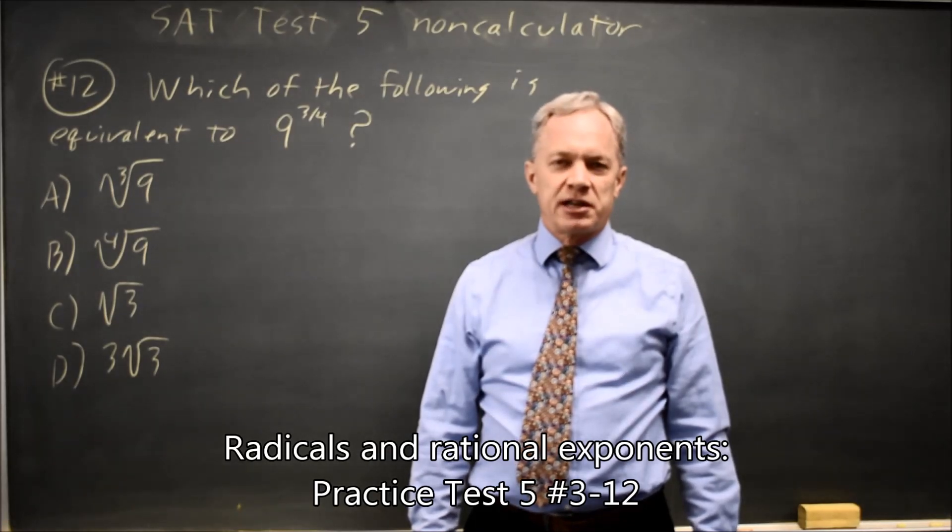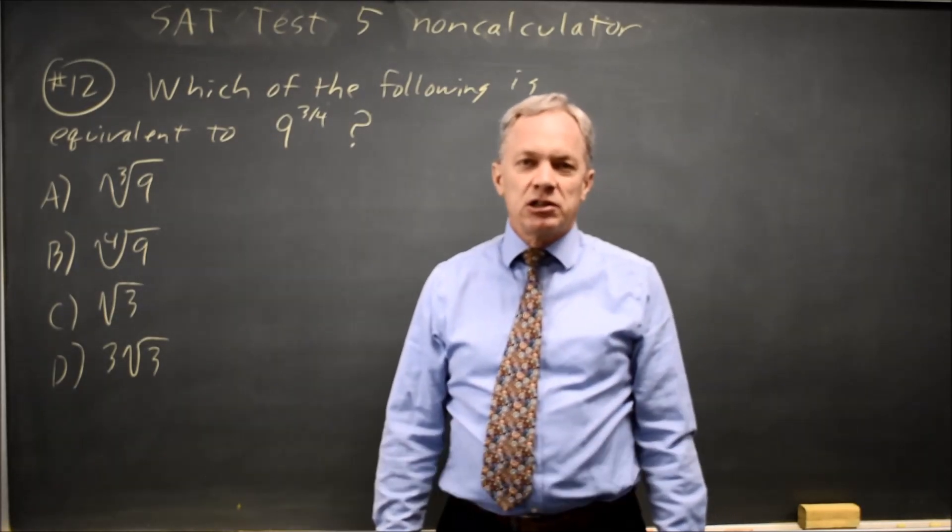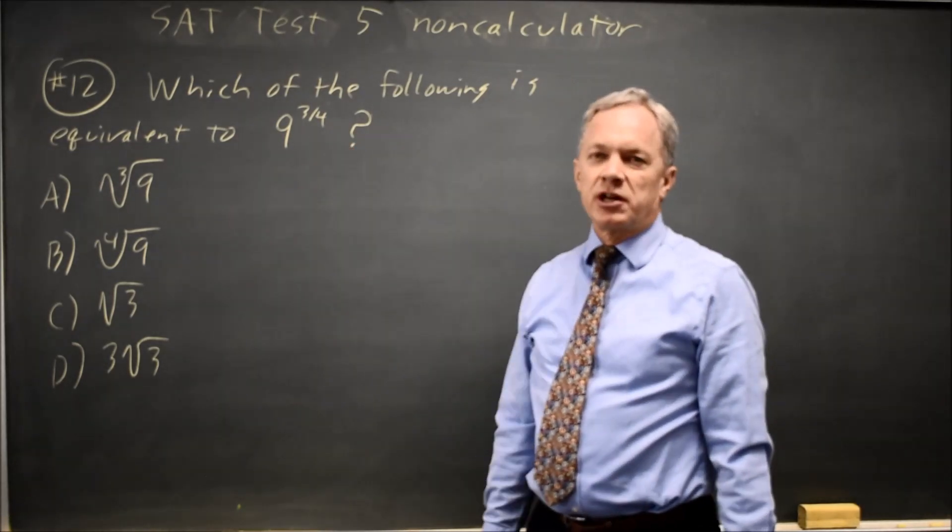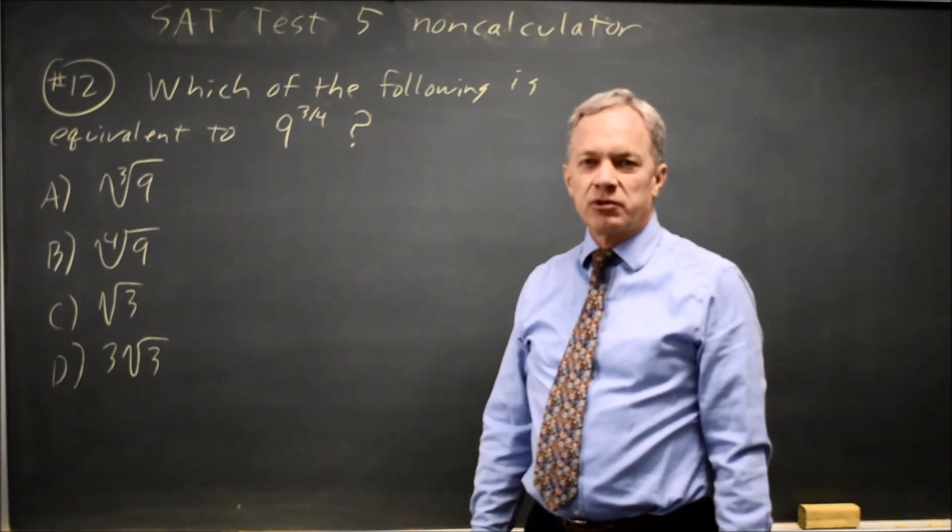This is SAT Test 5, non-calculator question number 12. College Board gives us a rational exponent and asks us to find an equivalent expression with a radical.